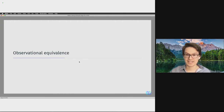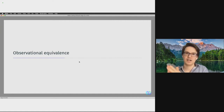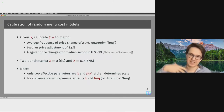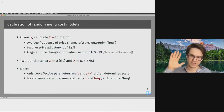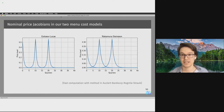This introduces two Jacobians: the nominal price Jacobian linking nominal marginal cost to the nominal price level, and the Phillips Curve Jacobian linking real marginal cost to inflation. We want to compute both of these objects for menu cost models. To do that, we calibrate menu cost models in a very standard way — for both the Golosov-Lucas and the Nakamura-Steinsson models.